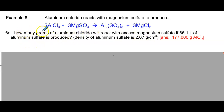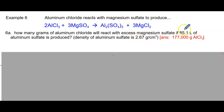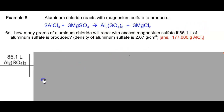As we look at this problem, we're going to figure out what our starting point is. Remember that we must start with a mass, a volume, or a mole, and we must have a limiting reactant. It tells us 85.1 liters — that's a volume. We can't start with the density, so the only option is to start with 85.1 liters of aluminum sulfate.